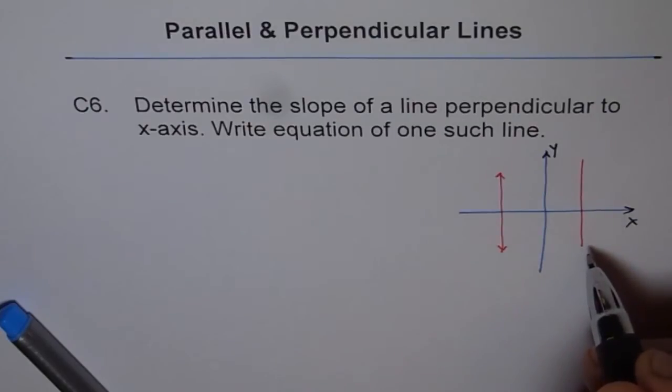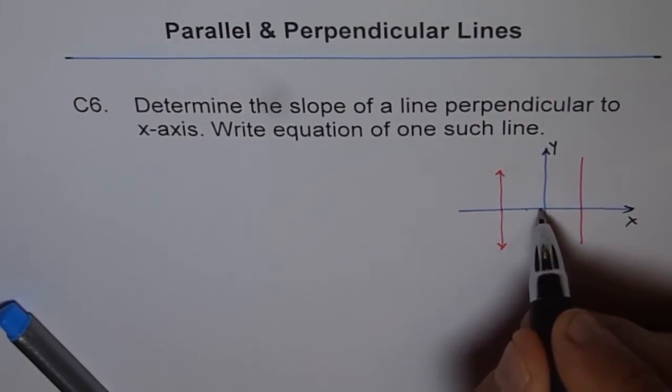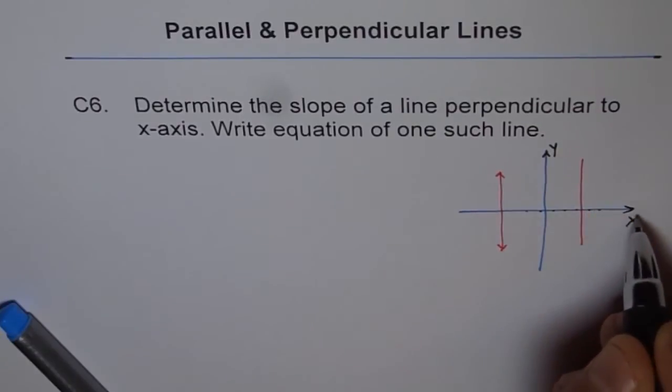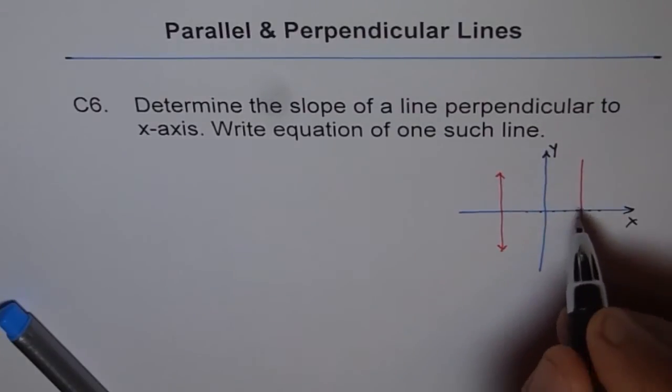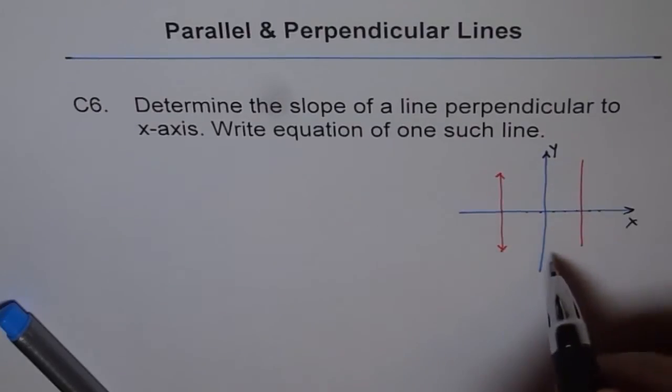So what could be its equation? Can you tell me equation of x-axis? At the x-axis, every point's y value is 0. So the equation of x-axis is y equals to 0. So, well, equation of vertical line is what?